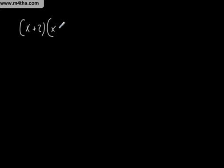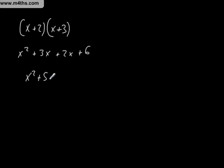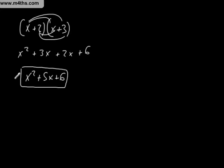Now let's take a step back. With (x + 2)(x + 3), let's FOIL this — first, outer, inner, last. x times x is x², x times 3 is plus 3x, inner gives plus 2x, and then the last gives plus 6. Tidying up: x² plus 5x plus 6. This is FOILing or expanding double brackets. Similarly, 5x(2x − 1) would give 10x² minus 5x.